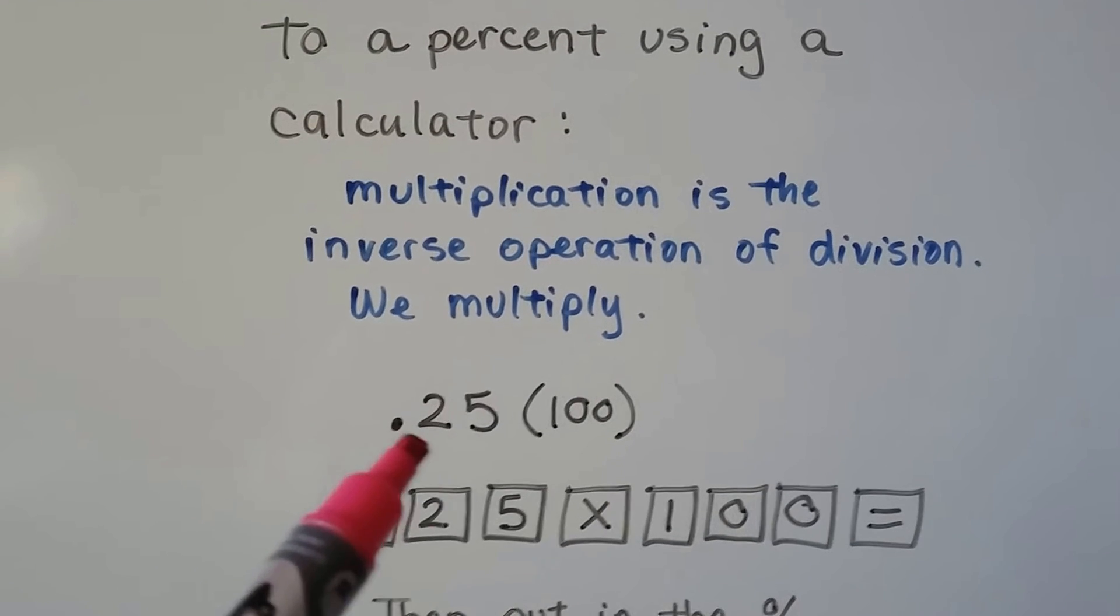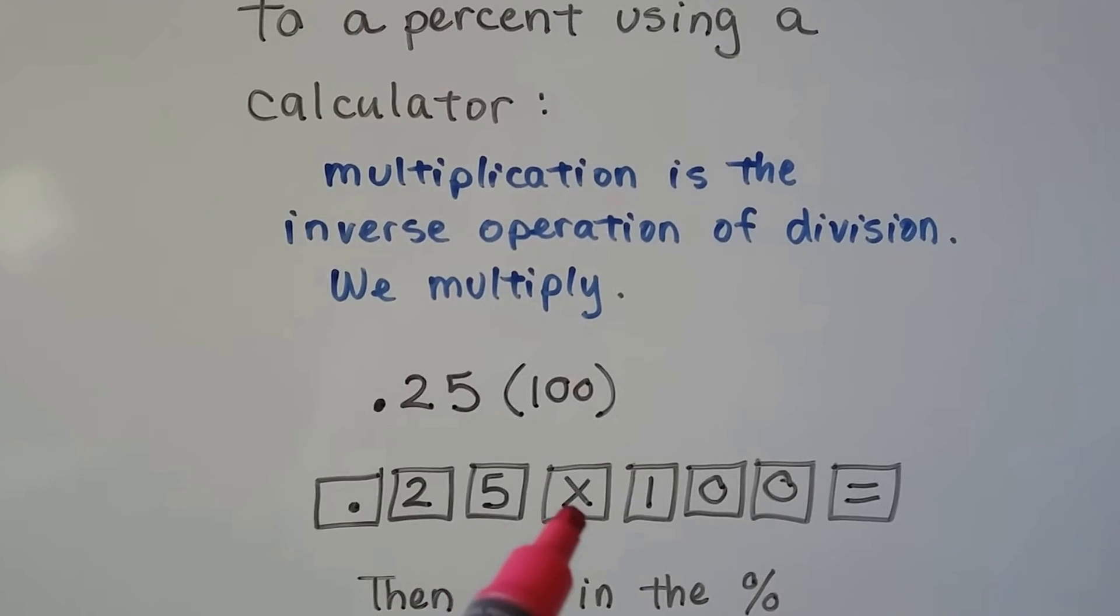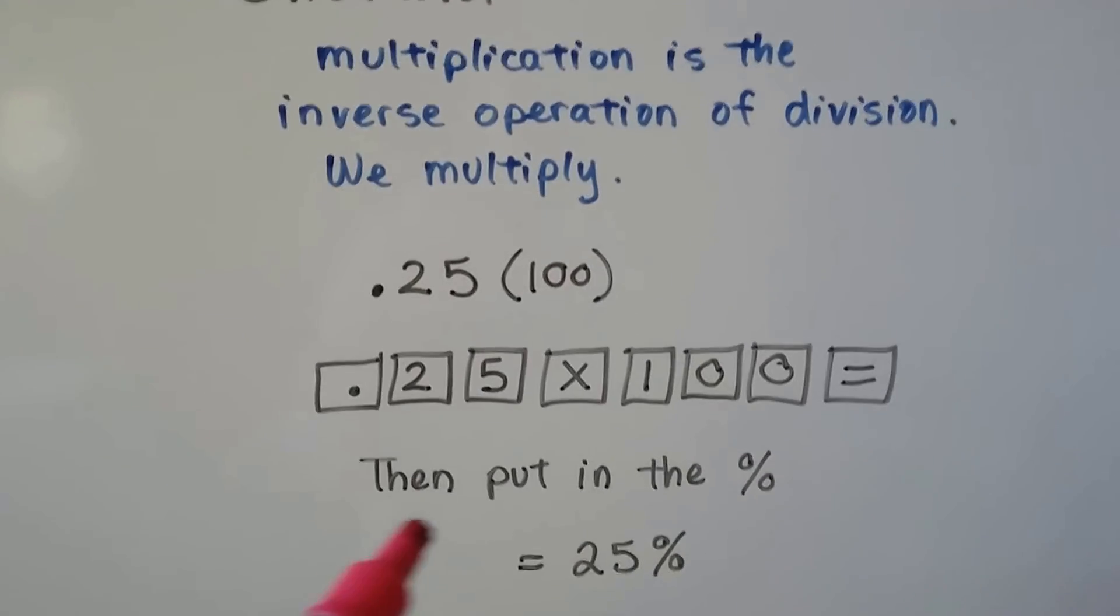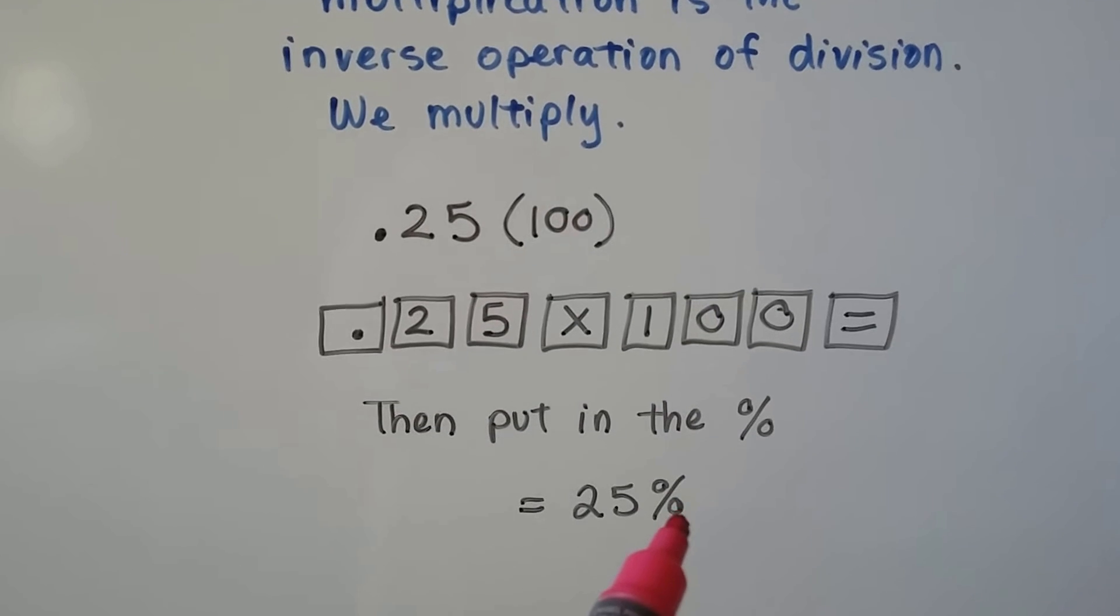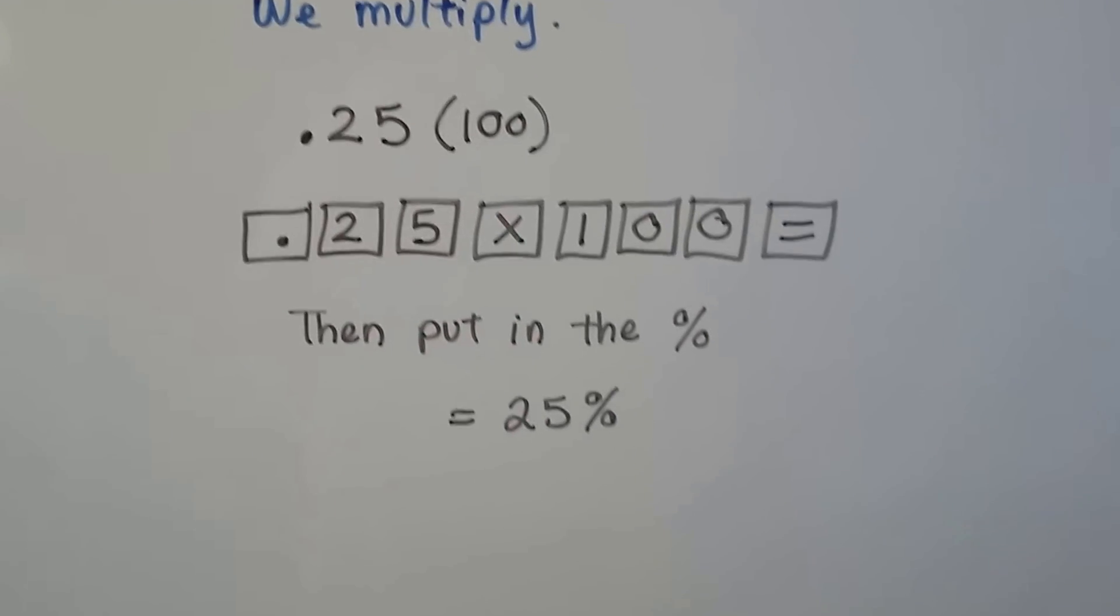We do .25 times 100. We put the decimal point, then a 2, then a 5, then the multiplication sign, 1, 0, 0 equals. And we have to put a percentage sign after it, because we're changing it into a percent from the decimal, and we get 25%.